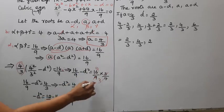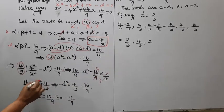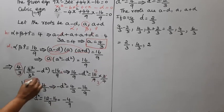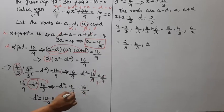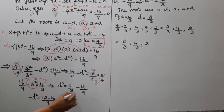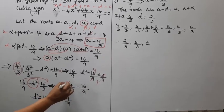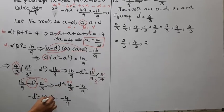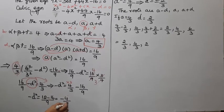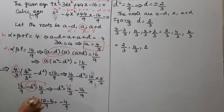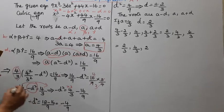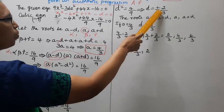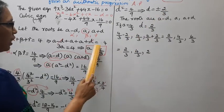After cancelling, 16 by 9 minus d² equals 4 by 3. So minus d² equals 4 by 3 minus 16 by 9. Taking LCM as 9: 12 minus 16 equals minus 4, so minus d² equals minus 4 by 9. Therefore d² equals 4 by 9, and d equals plus or minus 2 by 3.